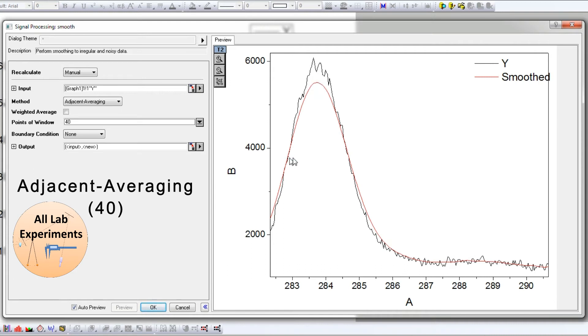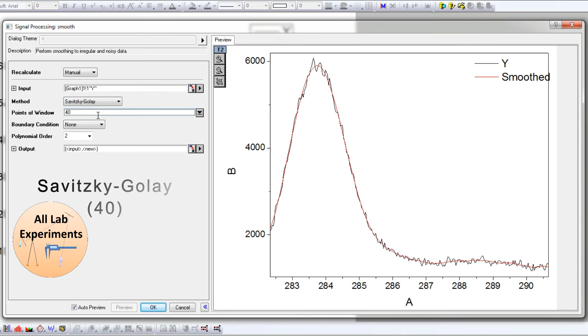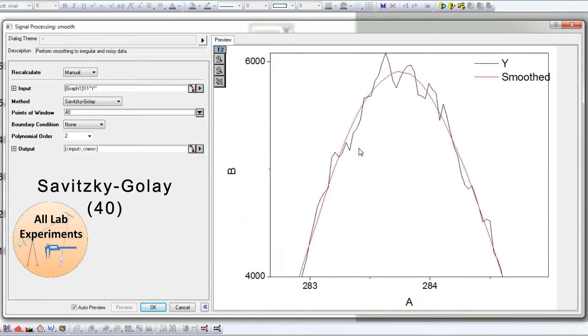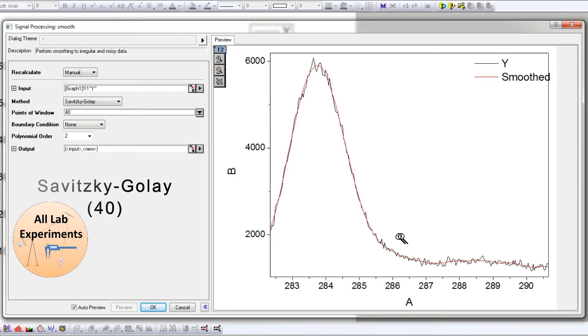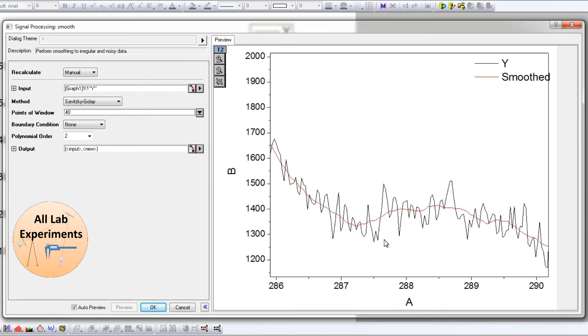In the case of Adjacent Averaging, you will see that the peak height is not the same. Therefore, the FWHM of this peak will also change, so this kind of smoothing is always unacceptable. Now let us try the Savitzky-Golay option. In this case, you will find that this peak is absolutely fine. The peak height and FWHM nothing is changing, and in the second region as well it is keeping the maximum information.